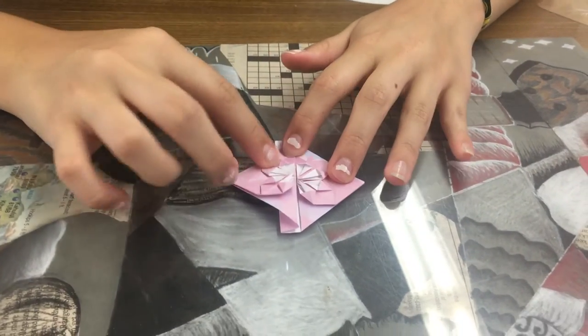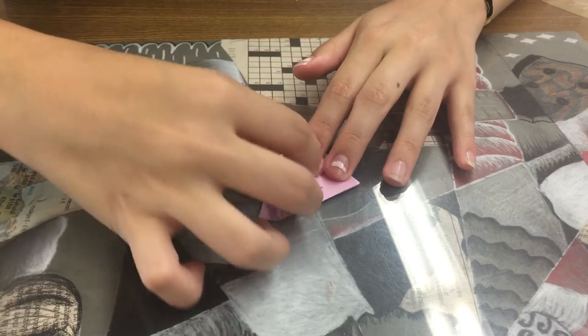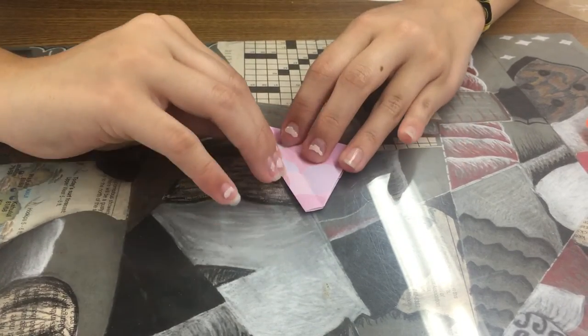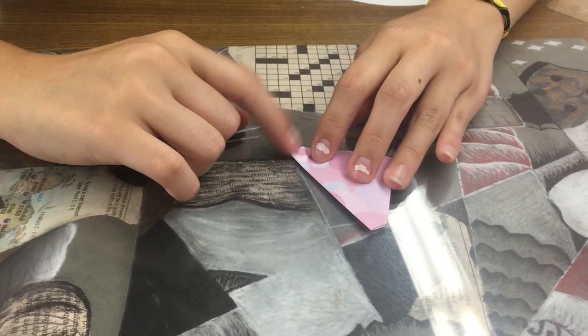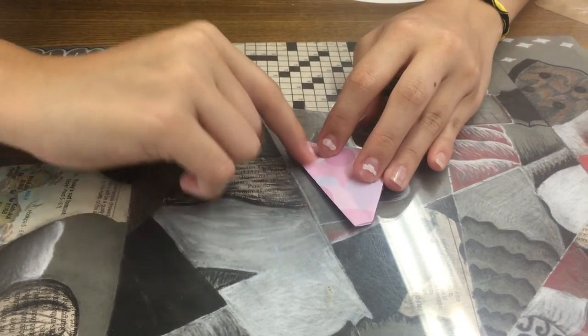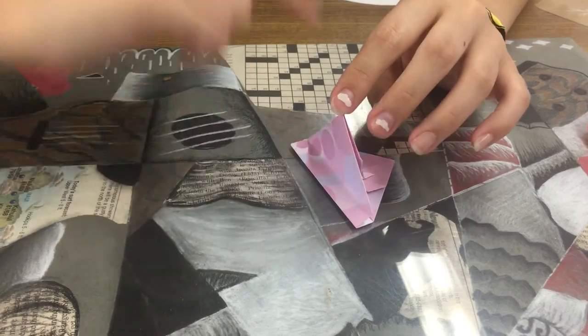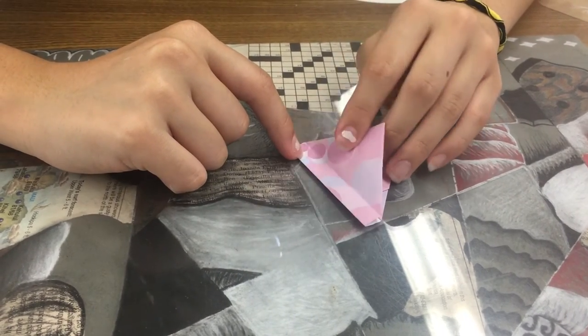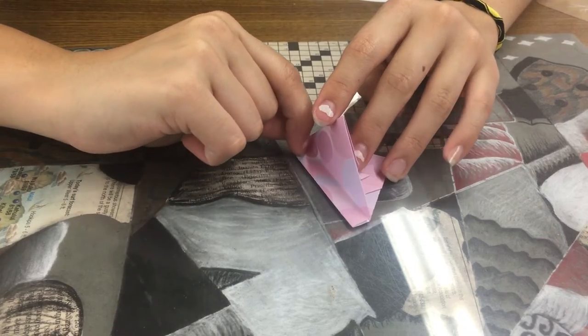So right here, now you just want to fold it in half this way. And you want to take this outer corner and you want to bring it to the crease we just made. Sometimes you can't see the crease, so it helps to hold the flap you just folded over perpendicular to the table.